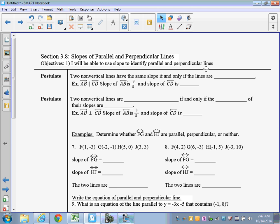This is a continuation of the 3.7 notes, that's why the numbers start at number 7 and not at number 1. We start off with a couple postulates.